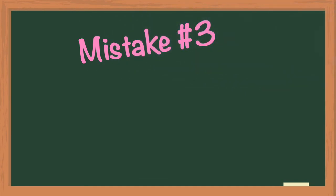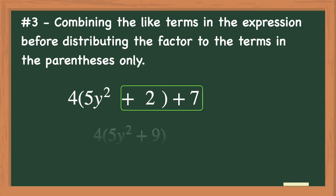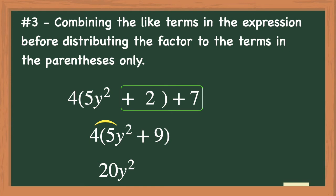Mistake number three: combining the like terms in the expression before distributing the factor to the terms in the parentheses only. Here the mistake is combining the like terms of positive 2 and positive 7, which gives you positive 9. Then they bring down the rest of the expression. Next they distribute the factor of 4 to 5y squared to get 20y squared, and then distribute the 4 to positive 9 to get positive 36. The expression reads as 20y squared plus 36, which is once again not correct.